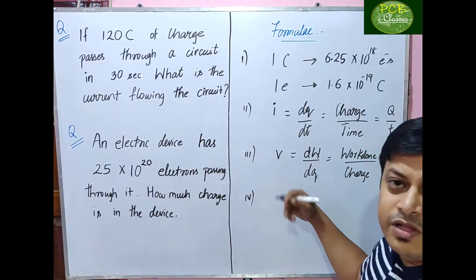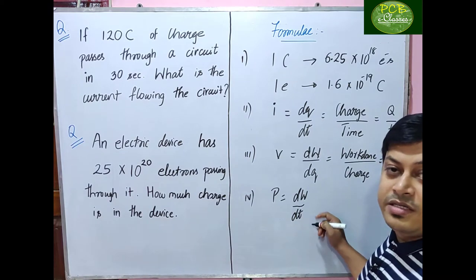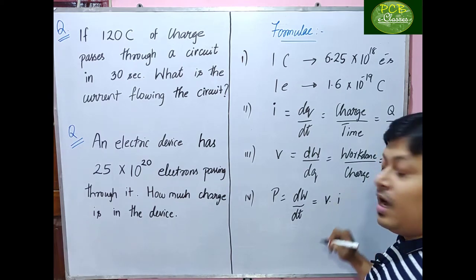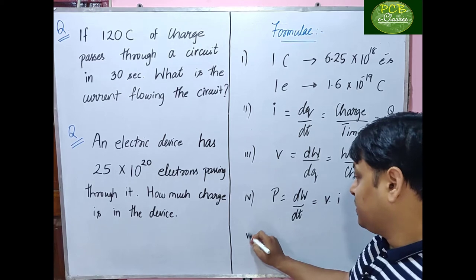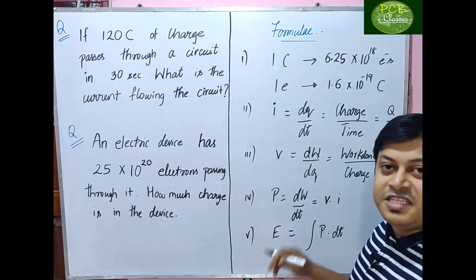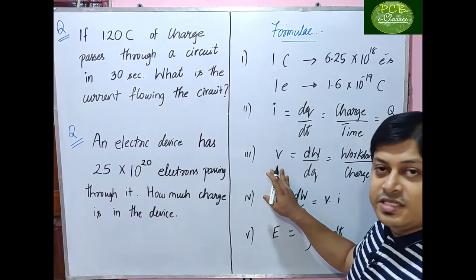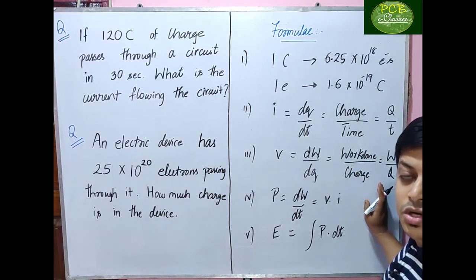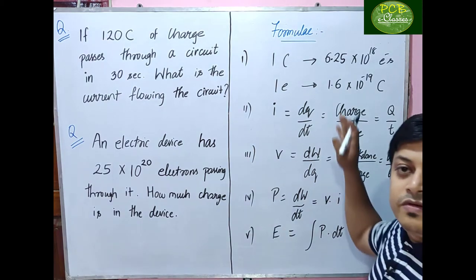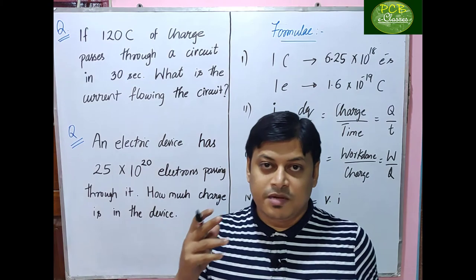Fourth, power is defined as dw/dt, which is work done per unit time, and can also be written as V × I. Fifth, electrical energy is given as the integral of p dt. Units: charge in Coulombs, current in Amperes, voltage in Joules per Coulomb, power in Watts, and energy in watt-hours.